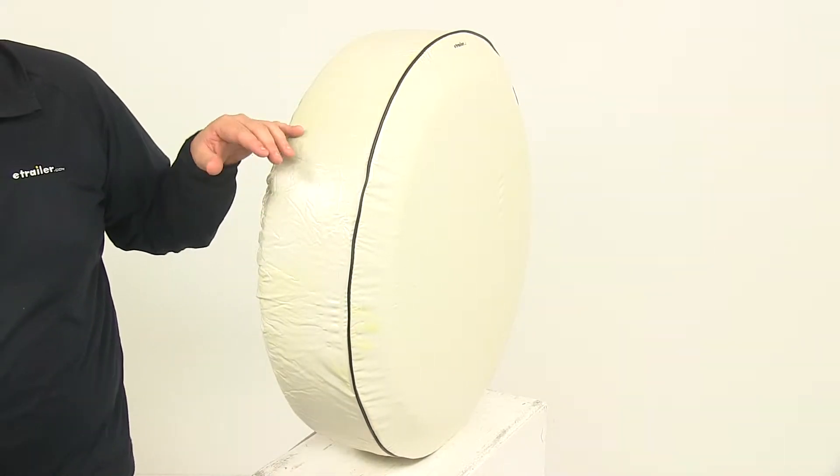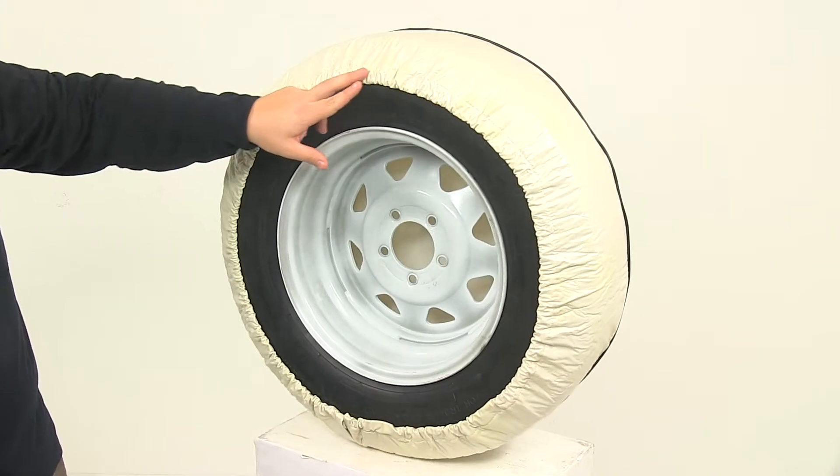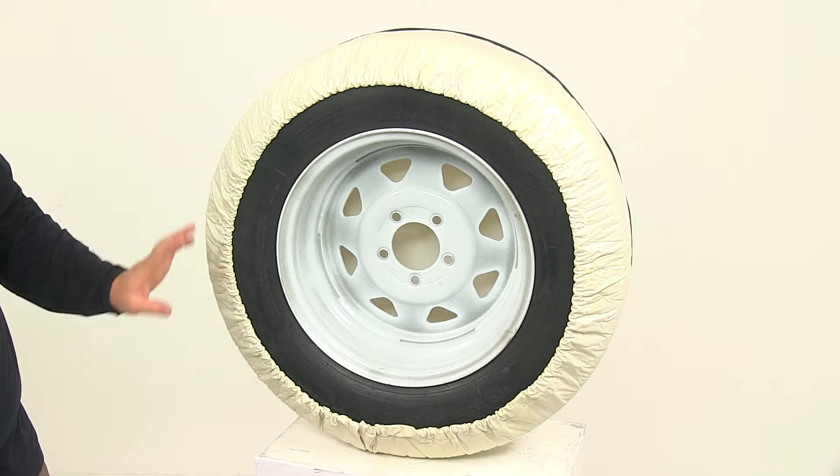It easily wipes clean with a damp cloth and mild detergent. Here on the back side, this is the stitching we're talking about going around the elastic portion right there.